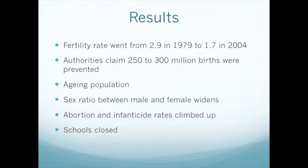This relates to abortion rates going up because when families find out that the child is female, they have the tendency to abort it. In the year 2012, 13,600 primary schools closed down due to the lack of enrollees. The number of students enrolled in primary and secondary schools between 2011 and 2012 fell to 145 million from the original 150 million. Also, between 2002 and 2012, the number of pupils in primary schools fell by 20%.